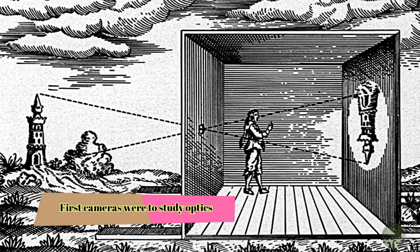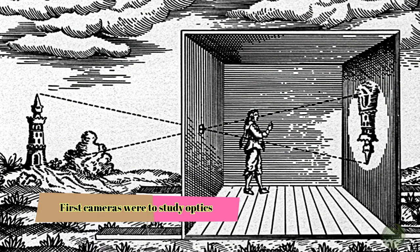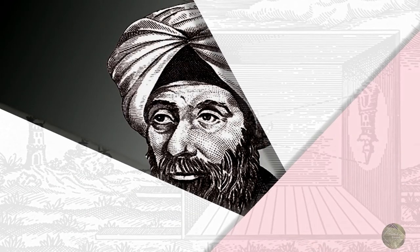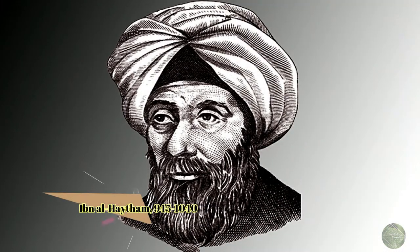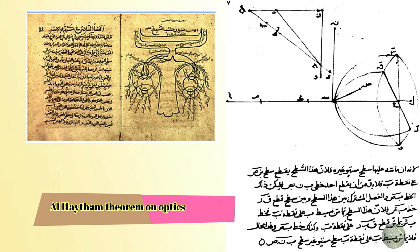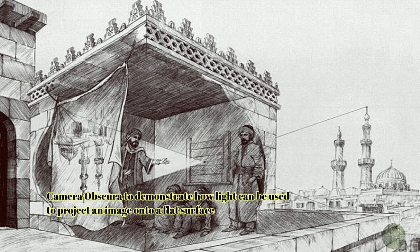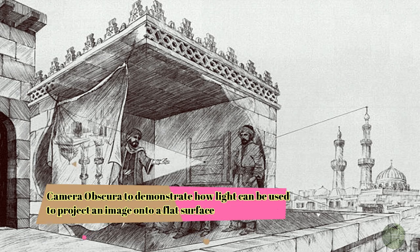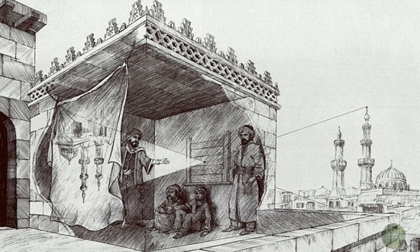The first cameras were used not to create images but to study optics. The Arab scholar Ibn al-Haytham (945–1040), also known as al-Haytham, is generally credited as being the first person to study how we see. He invented the camera obscura, the precursor to the pinhole camera, to demonstrate how light can be used to project an image onto a flat surface.